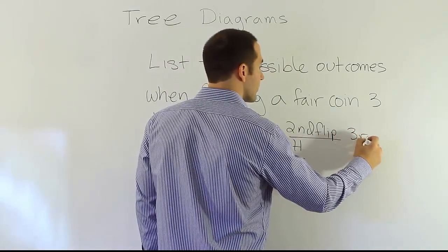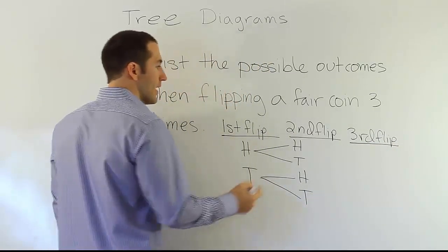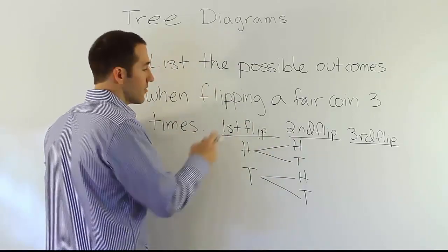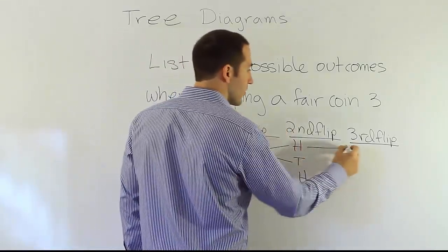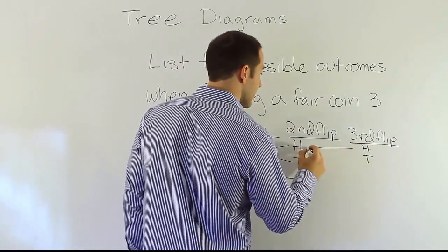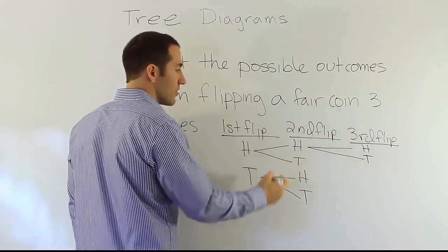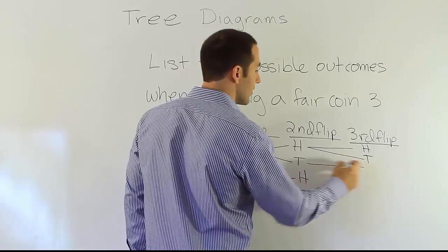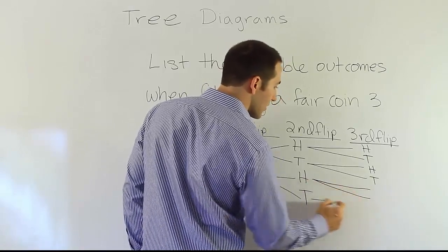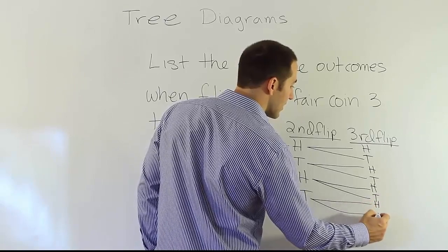Then for the third flip, you have the same kind of thing. If I flipped the coin on the second flip and got heads here, after first getting a flip of heads for the first flip, so I have two heads, my next flip of a coin could either be heads or tails. And then you imagine that if my first flip was heads and my second flip was tails, my third flip could still be either heads or tails. And so if you go on and on with the pattern, you'll see that each one of these will branch off to a heads or tails scenario.